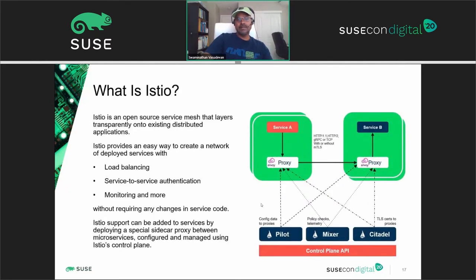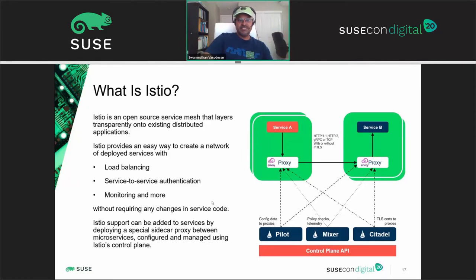Now moving to the main part — Istio. We talked about service mesh, service proxy, microservices architecture, and monolithic applications. Now we'll talk about Istio, which is basically a service mesh infrastructure provider. Istio provides your service mesh deployment with all the advantages we've already discussed: easy creation of a network of deployed services with load balancing, service-to-service authentication, monitoring, and more. The main key concepts Istio supports are control, observability, security, and configuration.